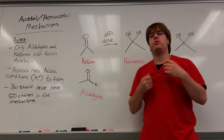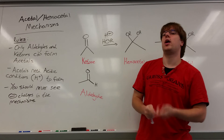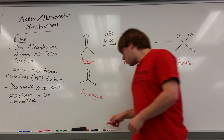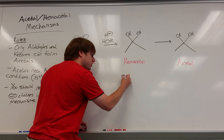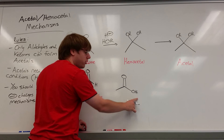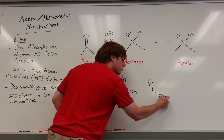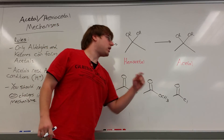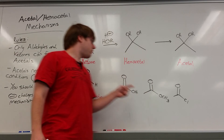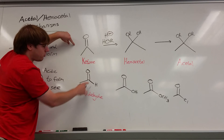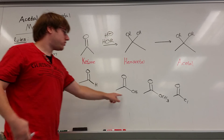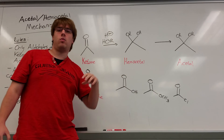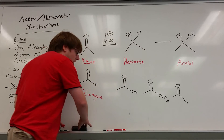Acetals can only be formed from two starting materials: either a ketone or an aldehyde — namely a double bond O that has nothing but carbons or hydrogens on it. Carboxylic acid derivatives — like carboxylic acid itself with a double bond O and OH, or double bond O with OCH3, or even double bond O with Cl — these cannot form a hemiacetal or acetal. If you see one of those reacting with H+ and HOR, watch the carboxylic acid derivatives video for that.